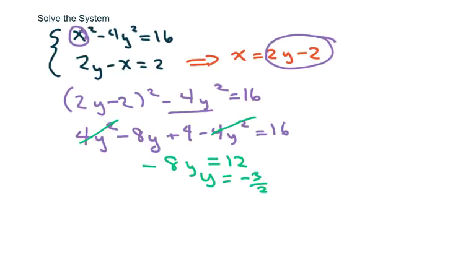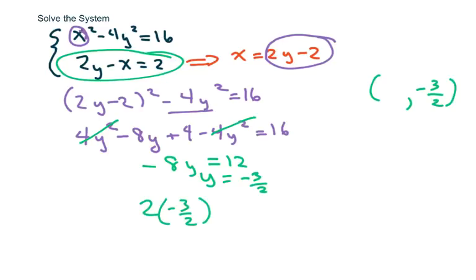So my y is negative 3 halves. And to find the x, I'm going to plug my y into the equation. So you get 2 times negative 3 halves minus 2.